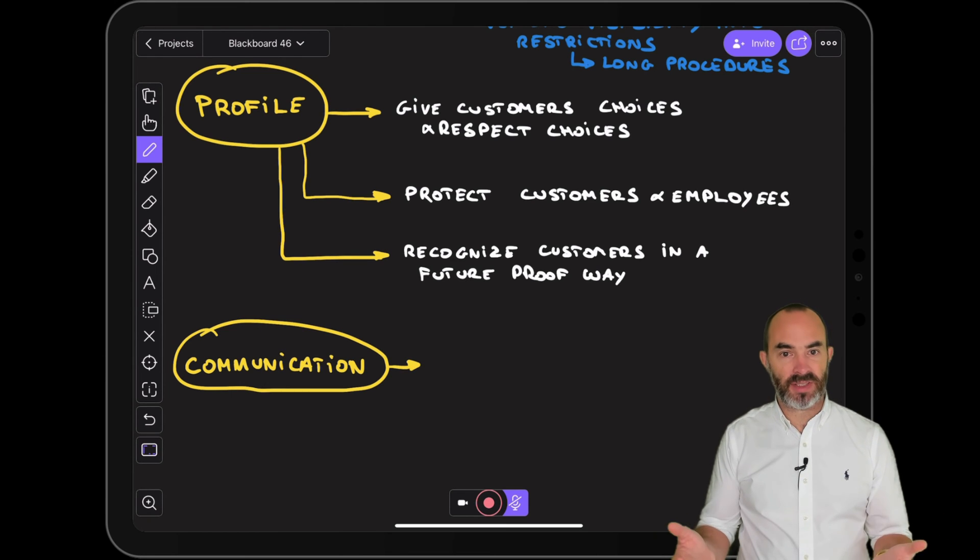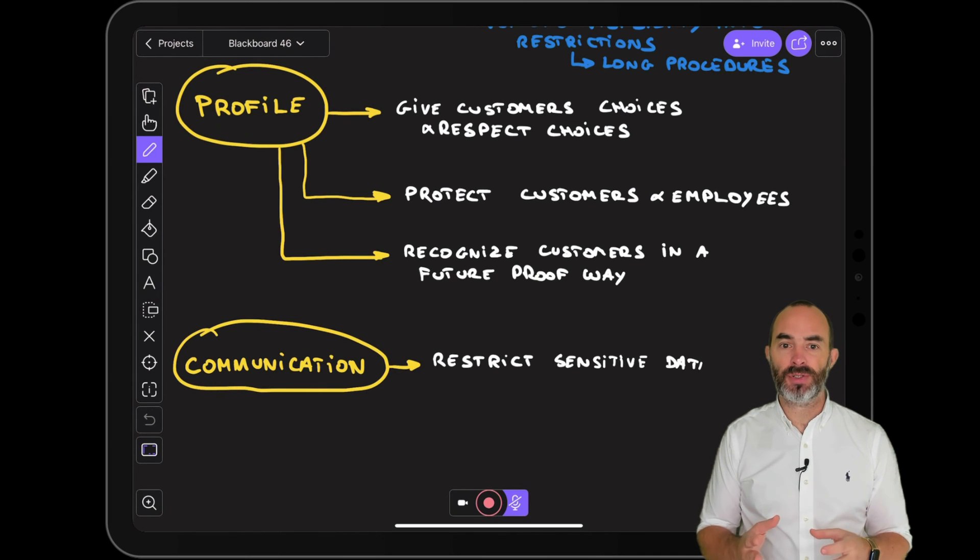When you want to personalize a customer experience you'll need to use personal customer data. It's required to understand which data is used at which moment for which use case, who can access that data in which context and whenever needed to restrict access for certain users when the reason for accessing the data isn't valid.